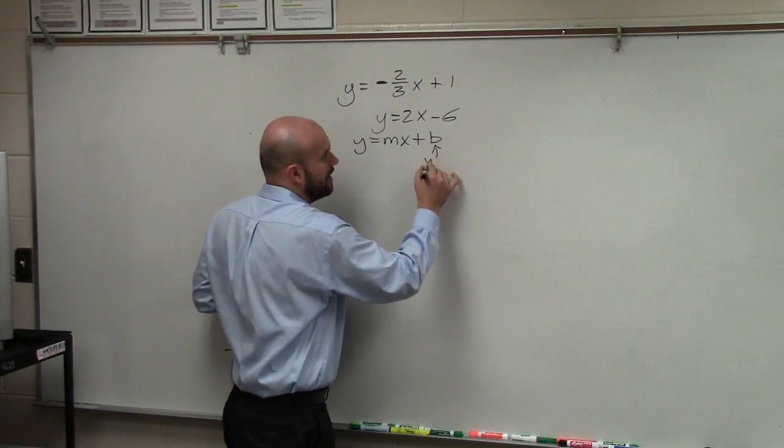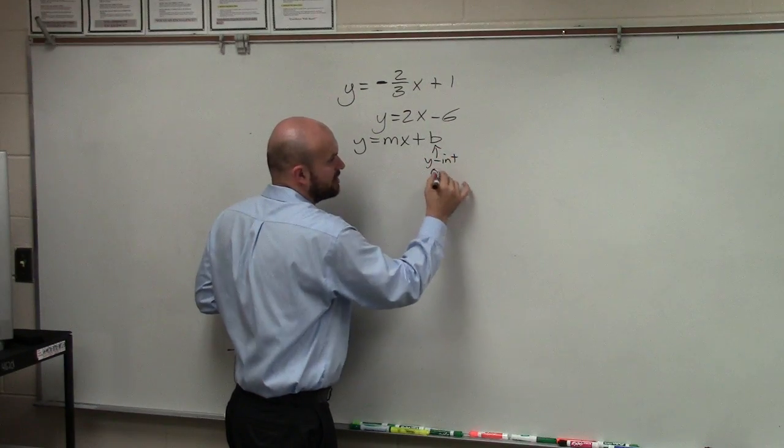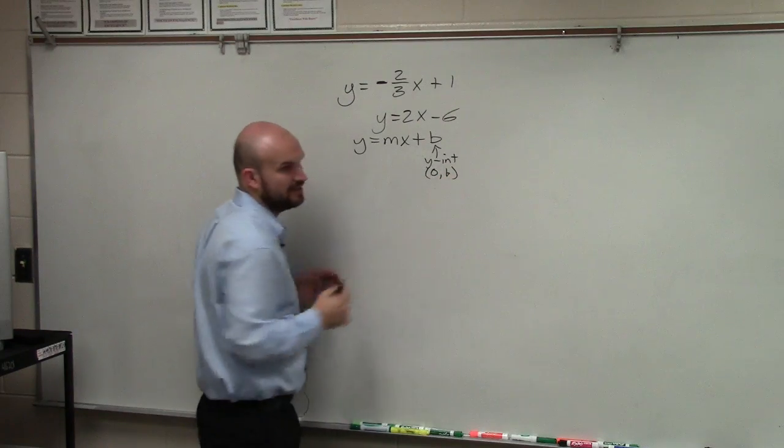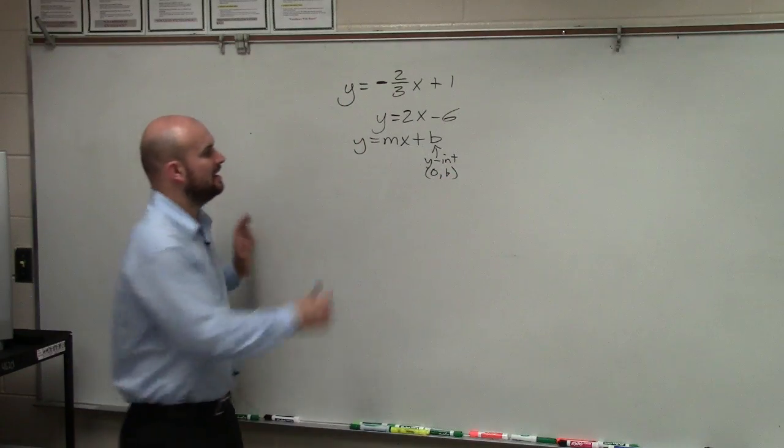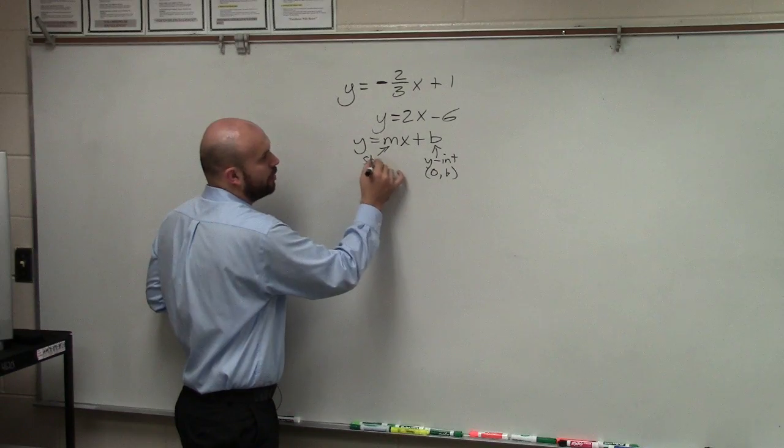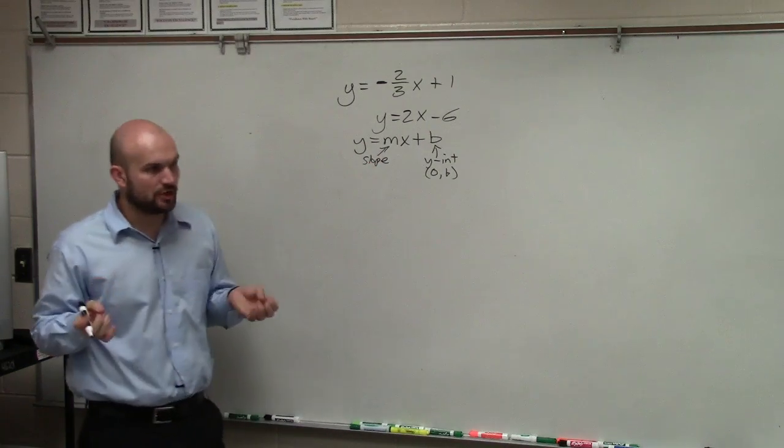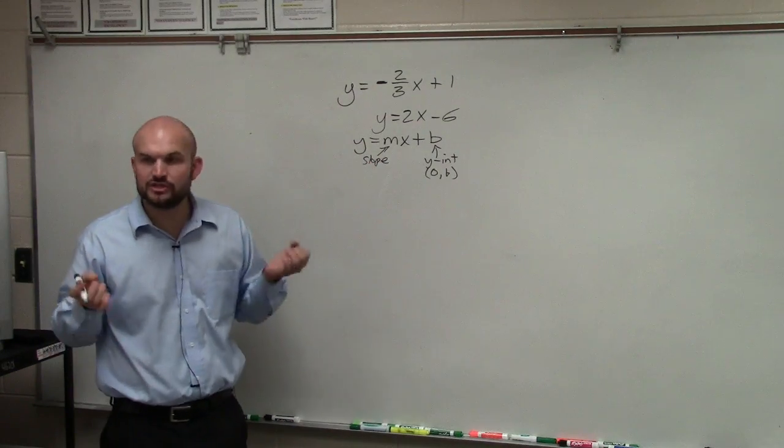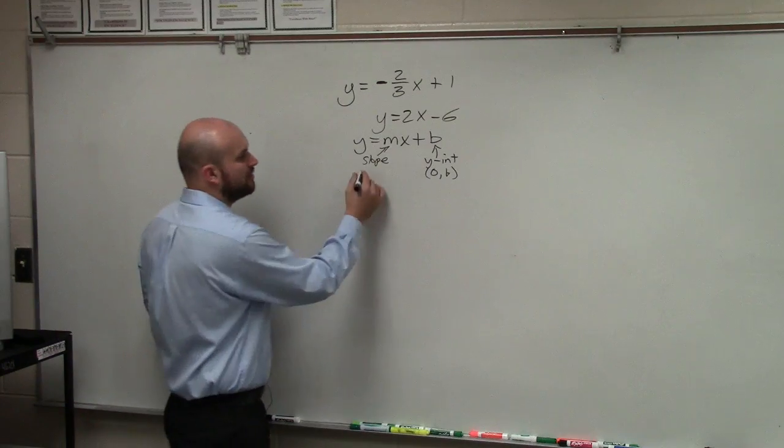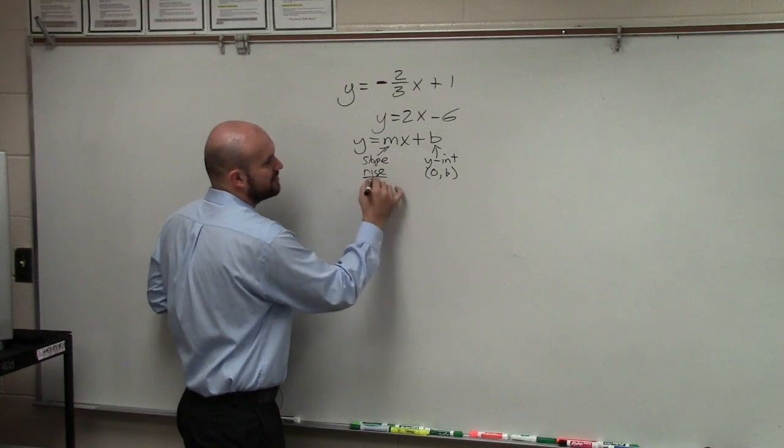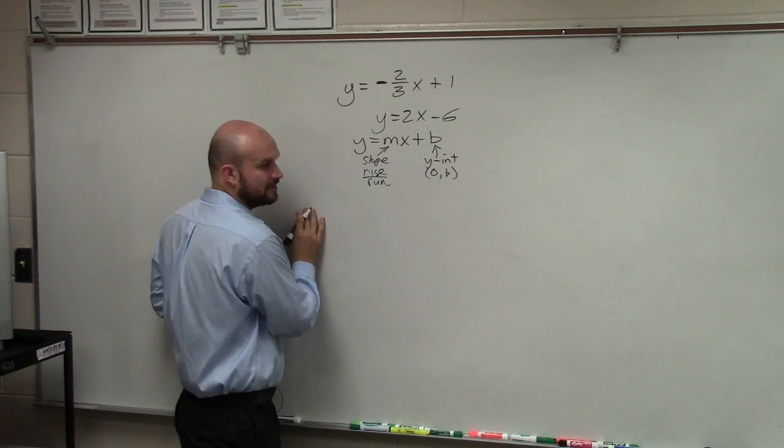b is our y-intercept, which is the coordinate point 0, b, meaning it's going to be on the y-axis. And m is our slope, which is the ratio between the change in the y-coordinates over the change in the x-coordinates between any two points, which sometimes we'll also refer to as rise over run.